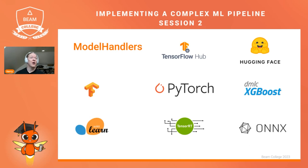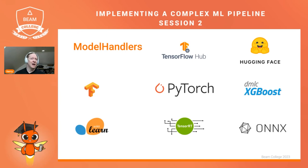If you think about what model handlers are already available and easy to use in Beam, this is our current list, although it's expanding. As Beam contributors, we also have the ability to add a new model handler to the repo. Personally, I use XGBoost frequently for classification, PyTorch when a model is not well supported by the HuggingFace Transformers package, and occasionally ONNX when I need to translate a model from another framework. We try to support everything users need, and if we miss something, we always accept contributions.